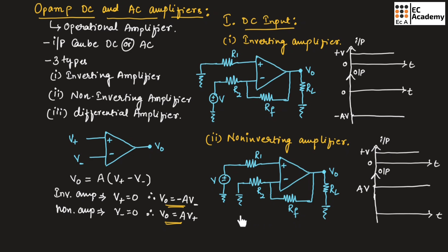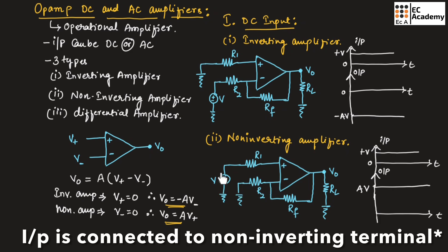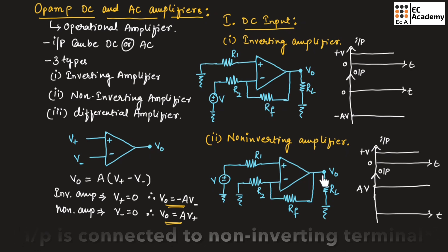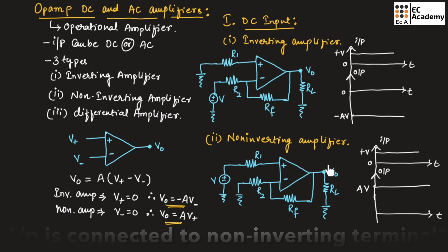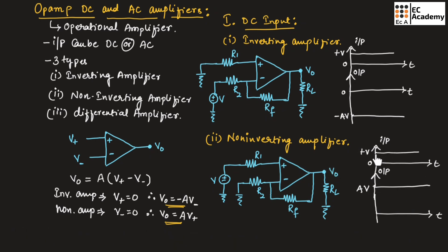This is the circuit of the non-inverting amplifier. The circuit is similar to the inverting amplifier. The only difference is that the input is connected to the non-inverting terminal and the inverting terminal is connected to ground. Since the input is connected to the non-inverting terminal, the output will be in the same phase as the input — output will not be inverted. The output is amplified and it is in the same phase as input.